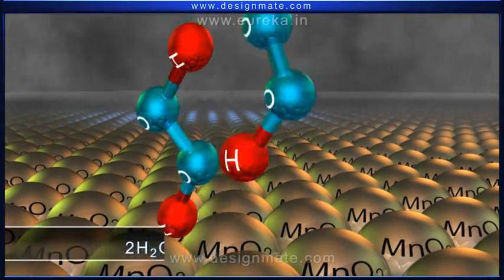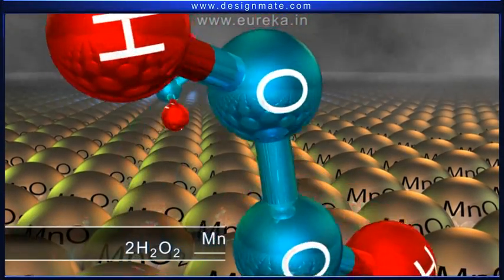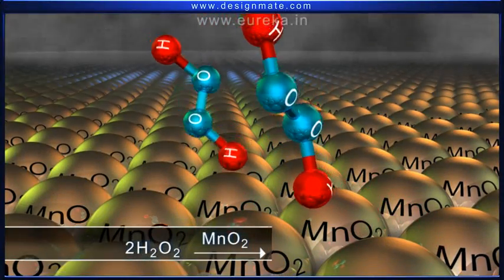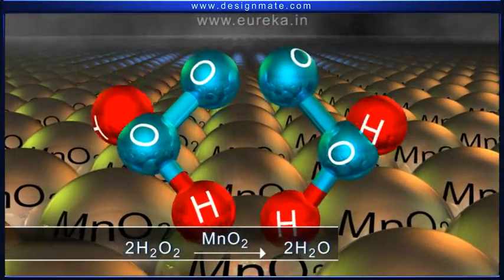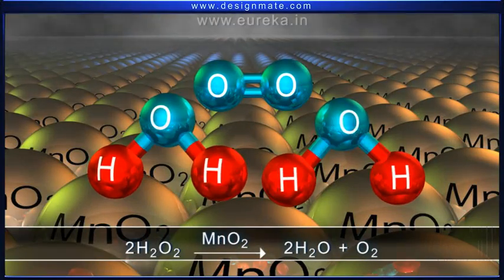Two molecules of hydrogen peroxide, in the presence of a catalyst, manganese dioxide, break up into two molecules of water and release a molecule of oxygen.